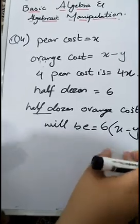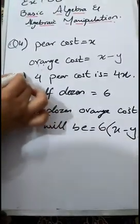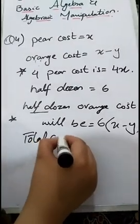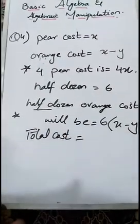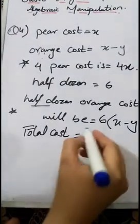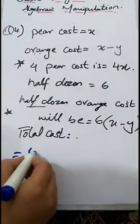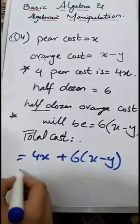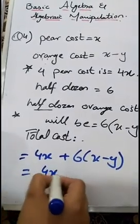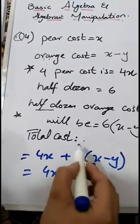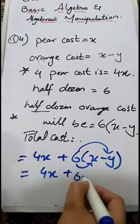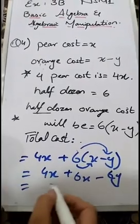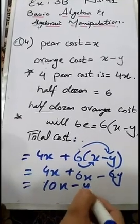At the end, we have to find the total cost of 4 pears and 6 oranges. So we sum up: total cost equals — we add the cost of 4 pears, which is 4x, plus the half dozen of oranges, 6(x minus y). Here we solve this expression: 4x plus 6 is going to be multiplied with the bracket terms, so 6 times x is 6x, and 6 times minus y is minus 6y. When we add 6x plus 4x, we get 10x minus 6y.